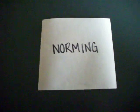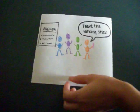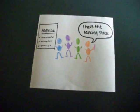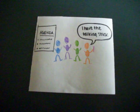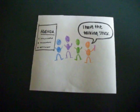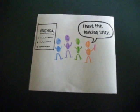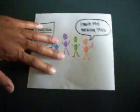Stage 3: Norming. In the norming stage, this is when people finally figure out what it takes to work together. They start to set rules, and then they start to work together.